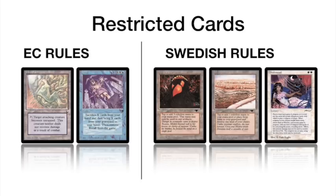In EC you're only allowed to play with one Maze of Ith and one Recall. In Swedish you're only allowed to play with one Mishra's Workshop, one Strip Mine, and one Shahrazad. Before discussing Strip Mine, which has the biggest meta impact, I'd like to briefly discuss the other cards. Interestingly, Recall has been recently unbanned by the Swedish rules, which raises the question of whether decks running two or three Recalls will become dominant.